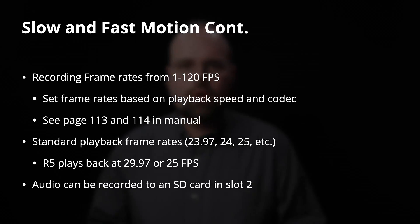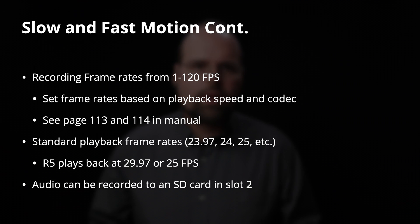The other recording mode that gets into a lot of frame rate stuff on the R5C is slow and fast motion. Slow and fast motion introduces the concept of recording frame rates and playback frame rates. With slow and fast motion, you can select a recording frame rate from 1 to 120 frames per second, with some caveats based on resolution — for example, you can't shoot 8K at 120 frames per second. There are limitations as to what frame rates you can select based on the codec, the system frequency, and the playback frame rate you're using.